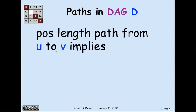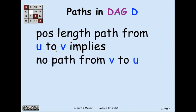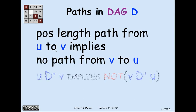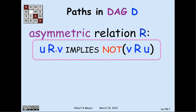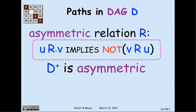If we look at directed acyclic graphs, if there's a positive length path from a vertex u to a vertex v, then since there are no cycles in a DAG, there can't be a path back from v to u. That property is called asymmetry. The positive path relation d+ in a DAG has this asymmetry property: if u can reach v by a positive length path, it's not possible for v to reach u. Abstracted: u r v implies not v r u. By definition of acyclic, d+ is asymmetric in a graph without cycles.